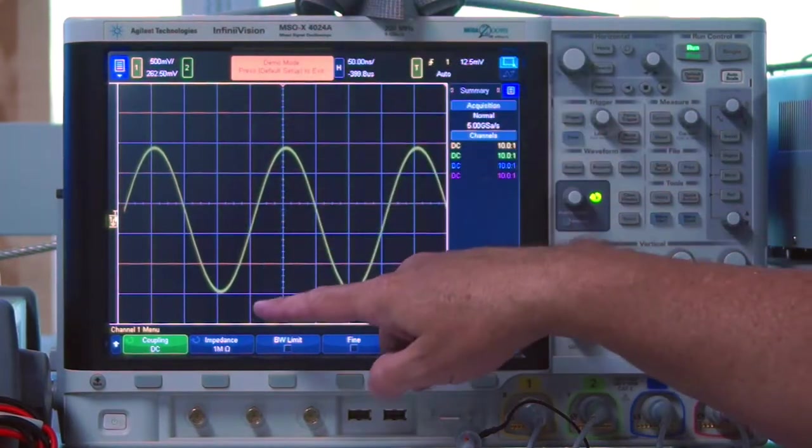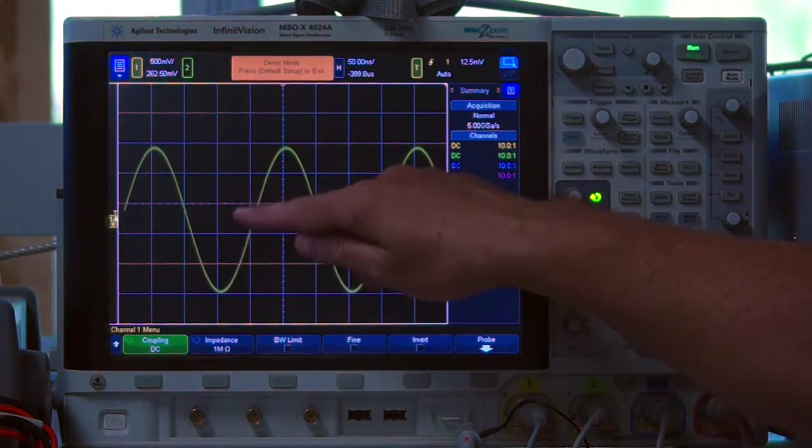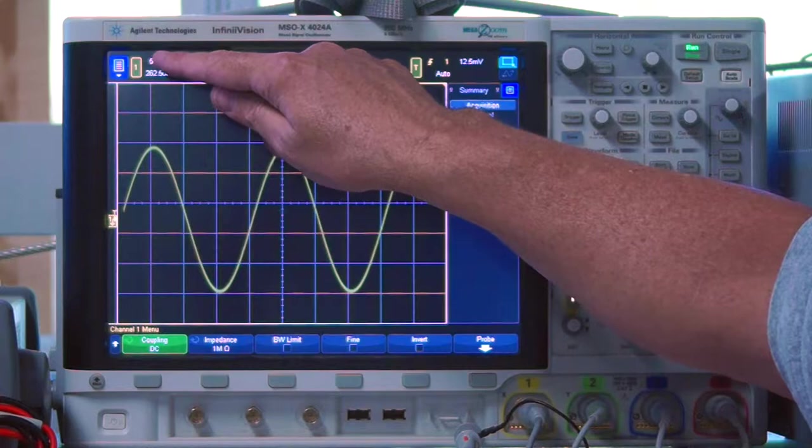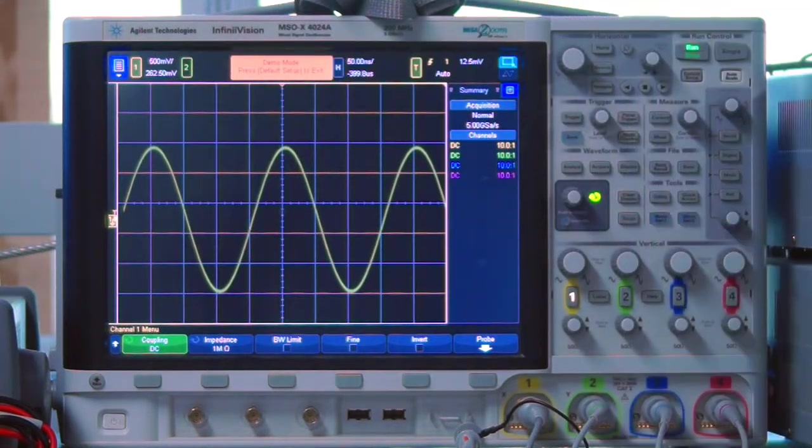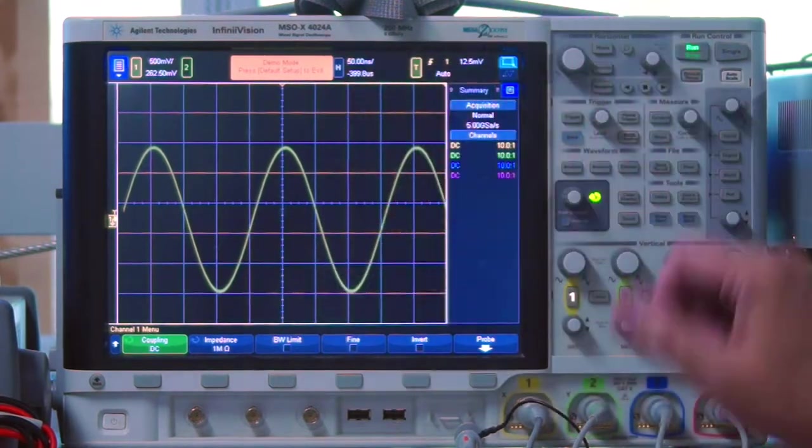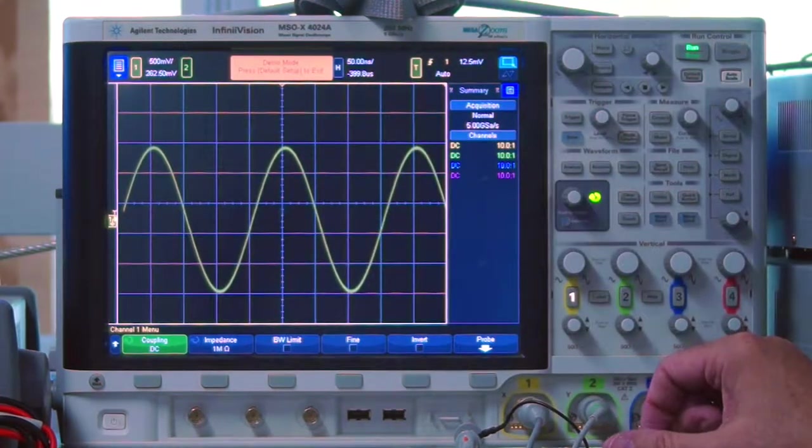You want to be able to know how to measure what the amplitude is without having some sort of digital readout of that. Again, what you always do: set a reference, count the number of divisions, multiply the number of divisions times what each division is worth, and there's your voltage peak to peak. Now, hopefully in your classes you've covered how to convert peak to peak into peak voltage, RMS voltage, or average voltage. That's a topic for another day. But for the scope, we're just going to be taking this measurement here as a peak to peak value. So that's kind of the vertical section, the two main parts.